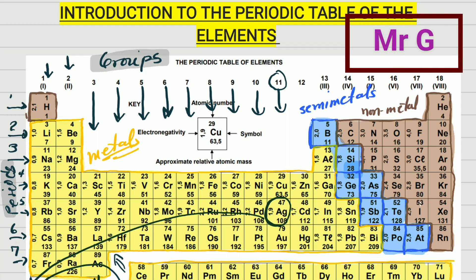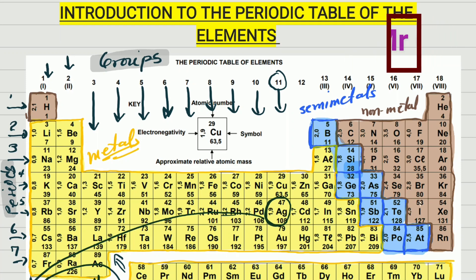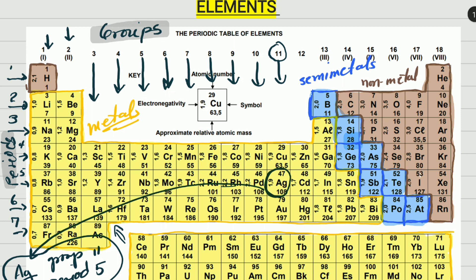Hello guys, Mr. G here and we are going to be making another video for the grade 8 learners. Last time, the last video we stopped right here. We learned about the periodic table, we colored the periodic table and separated the elements into three main groups. Those groups were metals, non-metals and semi-metals. We learned that the periodic table has groups starting from 1 and ending in 18, and it has periods starting in 1 and ending in 7, which are the rows of the table.